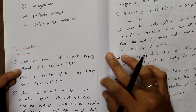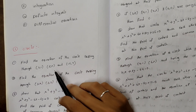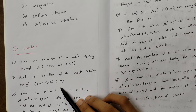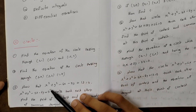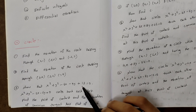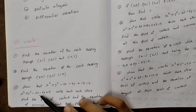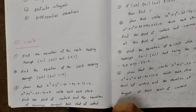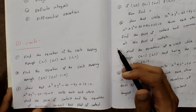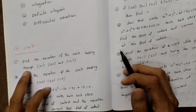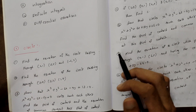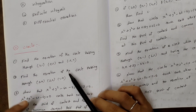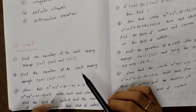Circles: Find the equation of the circle passing through (2,1), (5,5), and (-6,7). Next, find the equation of the circle passing through (3,4), (3,2), and (1,4). Also, show that x²+y²-6x-9y+13=0 and x²+y²-2x-6y=0 circles touch each other; find the point of contact and the equation of the common tangent.